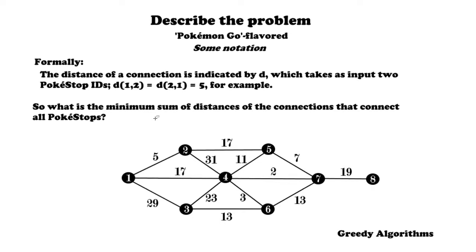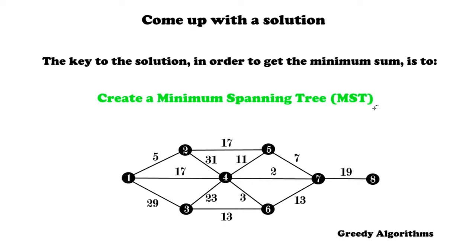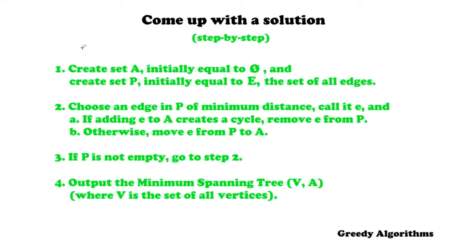Let's go directly to the solution. The key to getting the minimum sum is to create a minimum spanning tree. A minimum spanning tree is a tree in which all vertices are connected, and the sum of the weights on the edges to all vertices is minimal. This is what we want in order to get the minimum sum for our Pokestop example. The question, of course, is: how do we create a minimum spanning tree?